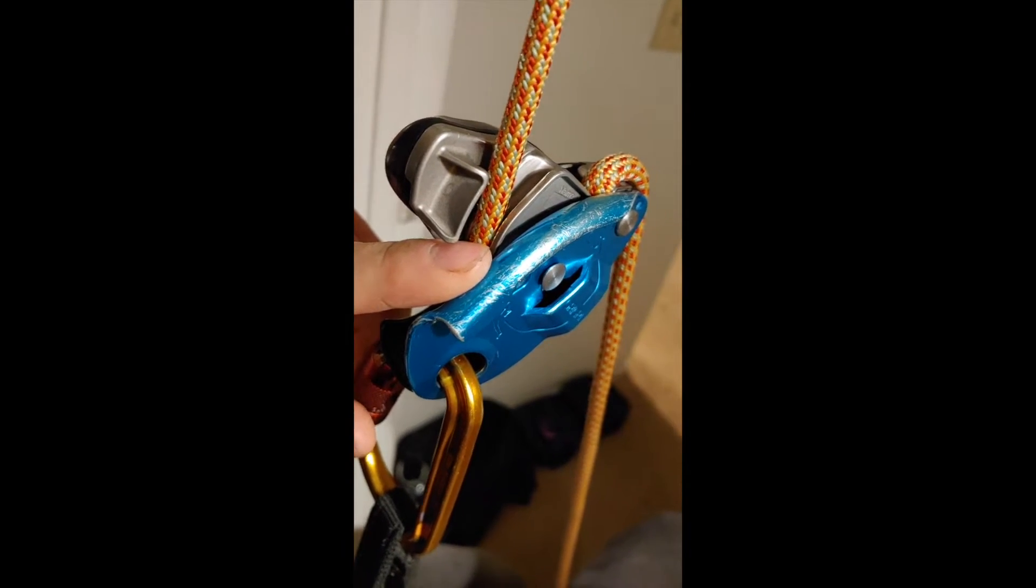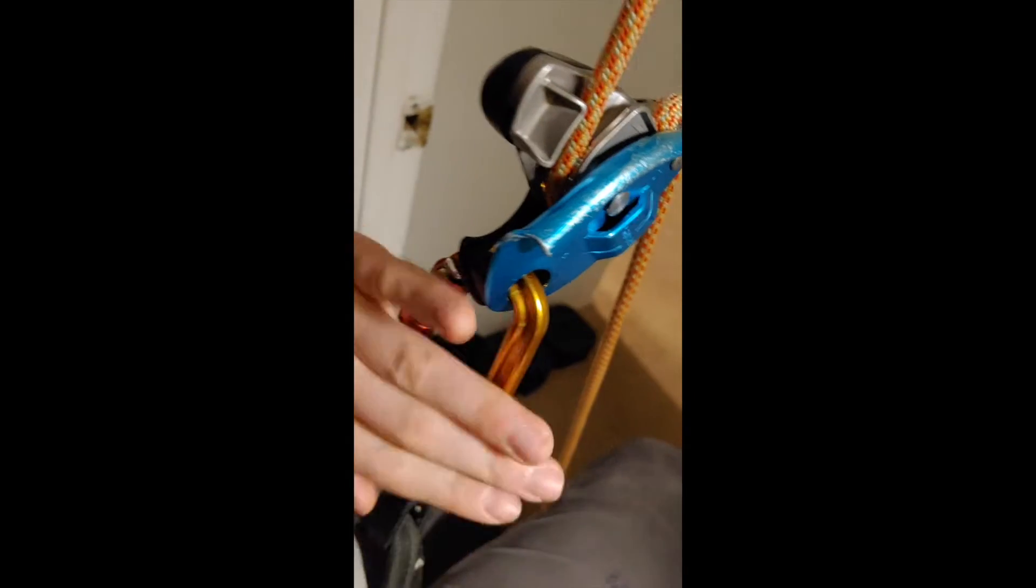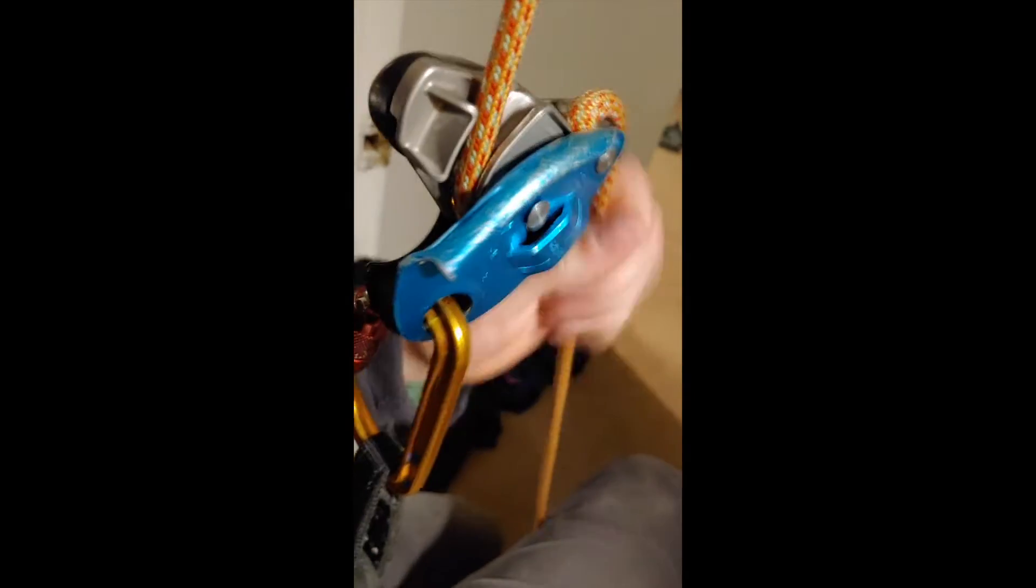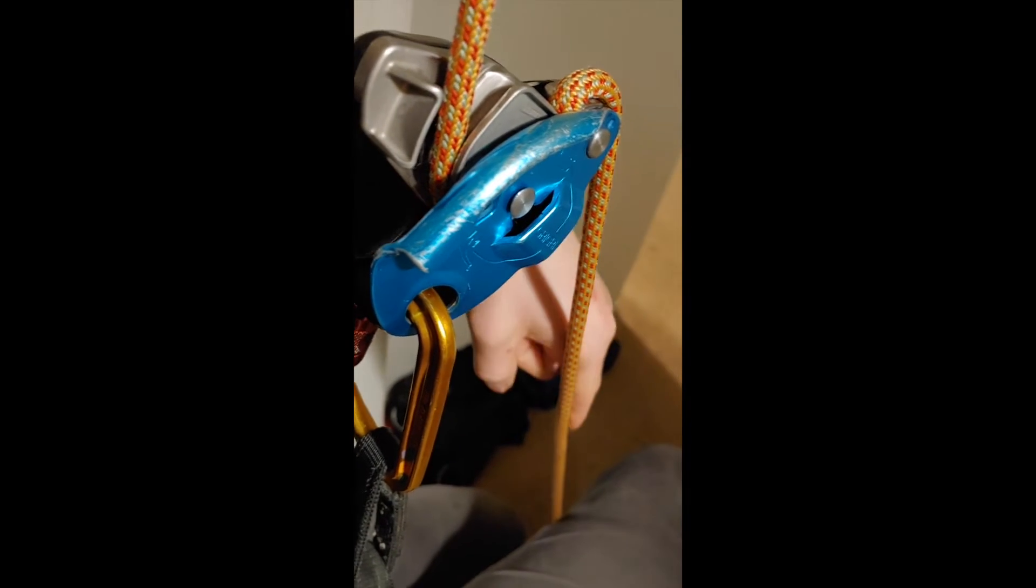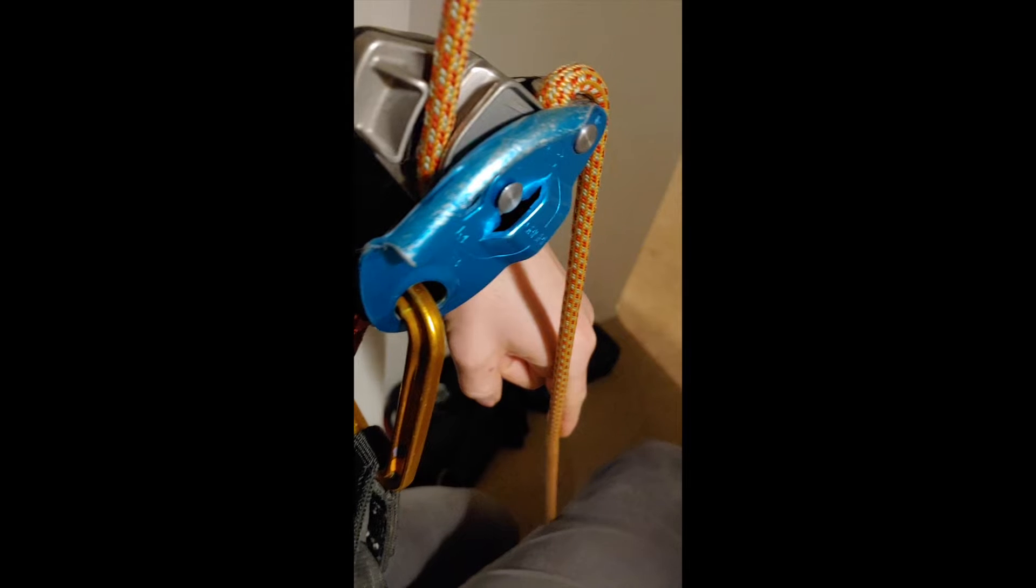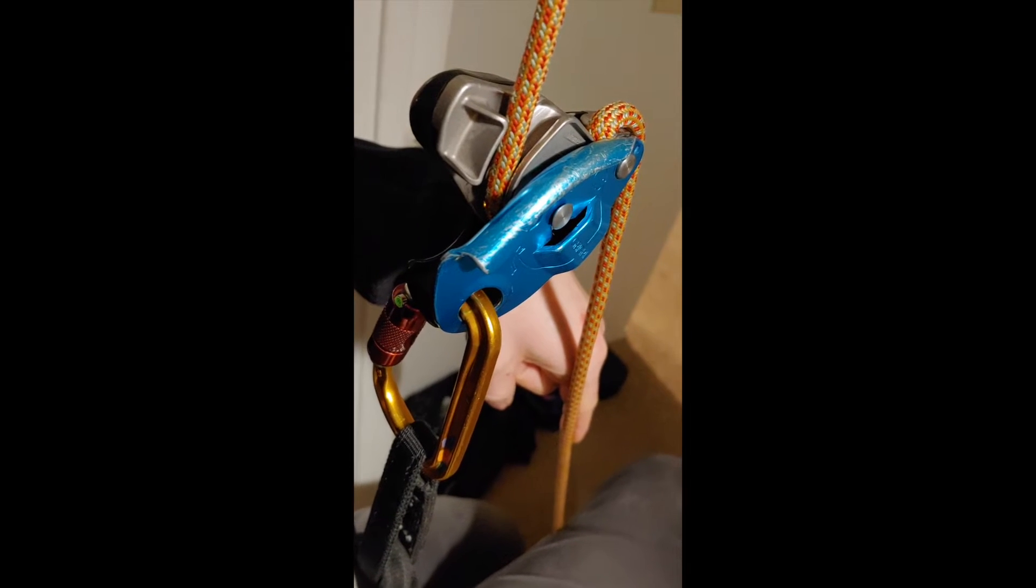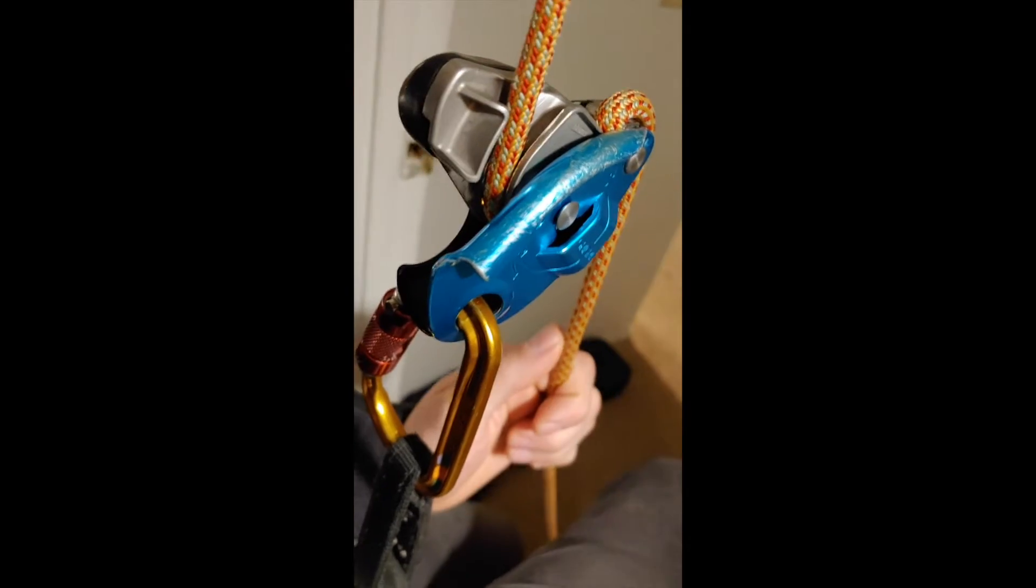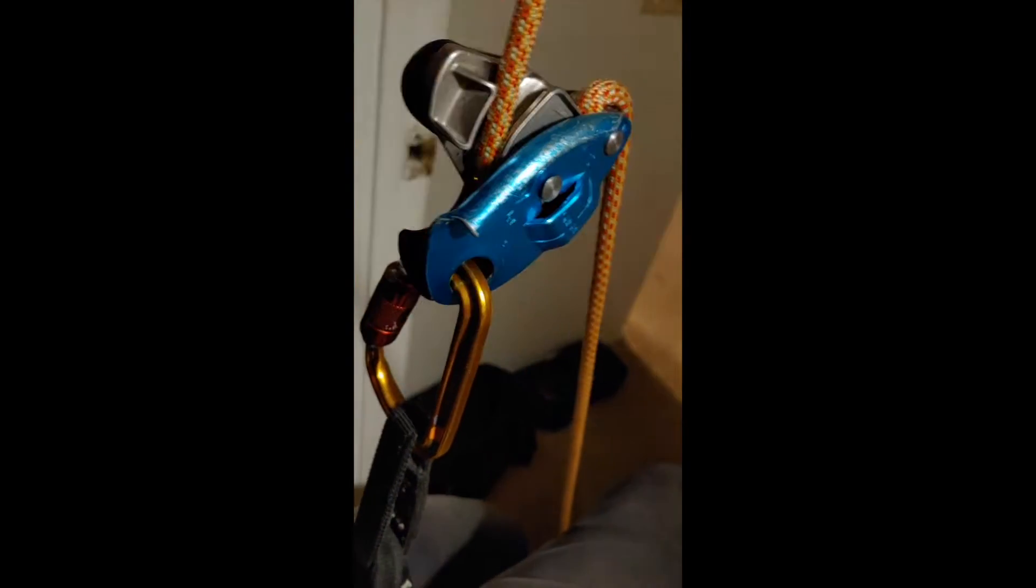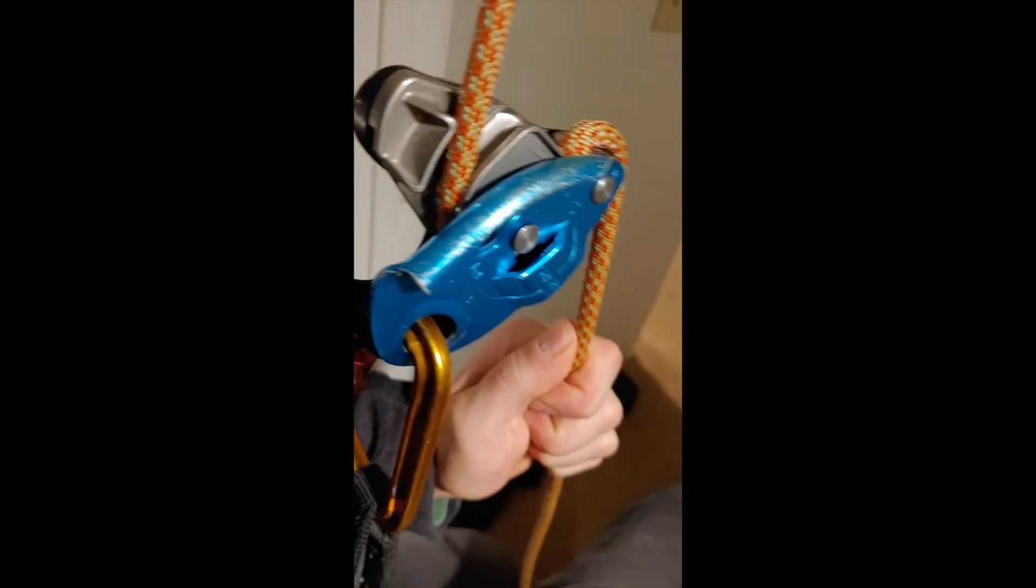So this can only happen if the Grigri is weighted by a user and then there is a ton of force put on the brake strand of the Grigri up to potentially as much as the climber's or user's weight because it has to invert the entire device by pulling down on it.